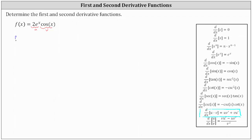So f prime of x is equal to the first function, or u, which is two e to the x, times the derivative of the second function, which is the derivative of v — giving us the derivative of cosine x with respect to x. And then plus the second function, or v, which is cosine x, times the derivative of the first function, or the derivative of u, which gives us the derivative of two e to the x with respect to x.